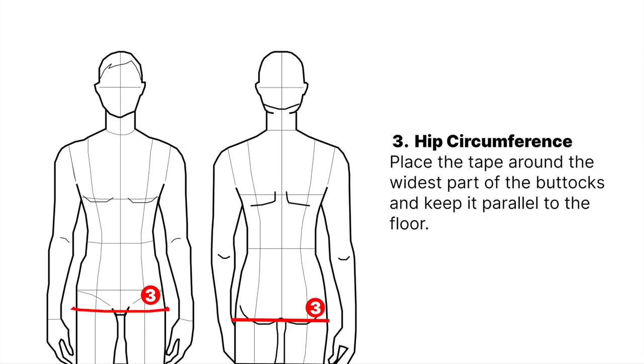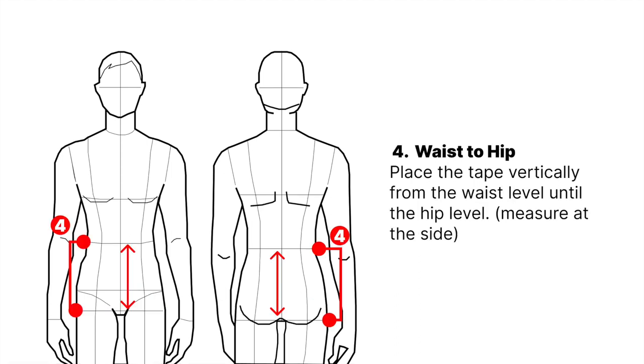Hip circumference: place the tape around the widest part of the buttocks and keep it parallel to the floor. Waist to hip: place the tape vertically from the waist until the hip level.